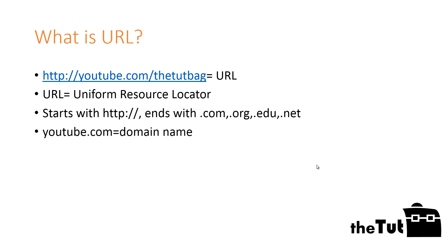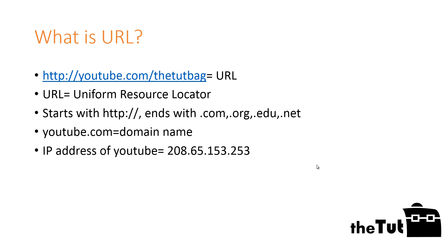The domain name in a URL helps identify and locate computers on the internet. Each domain name is unique. A domain name works like a shortcut — the shortcut links to a series of numbers called an IP address, which gives the specific address of where the site you're looking for is located on the internet.